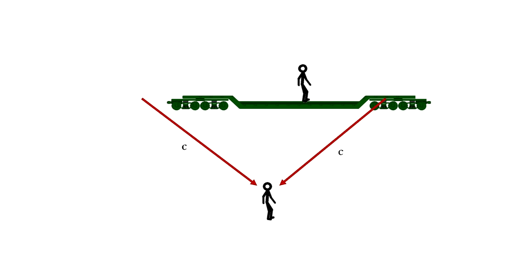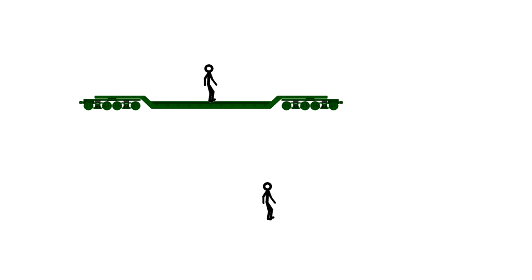The light from both strikes travel the same distance, at the same speed, and reach the observer on the ground at the same time. He correctly concludes that lightning hit the front and back of the train car at the same time.